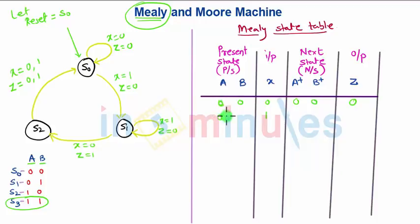Whereas for S0 equals 0, 0, when X equals 1, it will move on to S1. S1 corresponds to 0, 1. Hence next state will be 0, 1 but still the output is 0. So these are the two cases for S0.